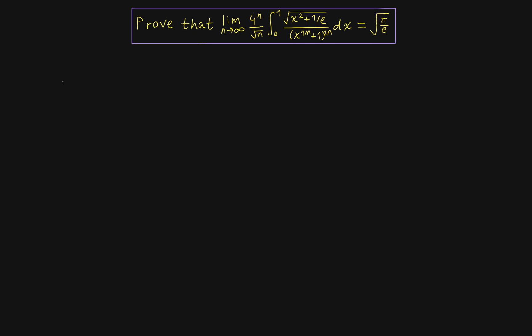Here's an interesting problem from the Romanian mathematical magazine. It asks, prove that the limit as n approaches infinity of 4 to the n over square root of n of this integral is square root of pi over e. So this may look difficult at first, like the integrand is very complicated to work with, and in fact you're not supposed to directly evaluate it and then work with it in the limit. What we're going to instead do is find the asymptotics of the integral and use one well-known method for this, Laplace's method.